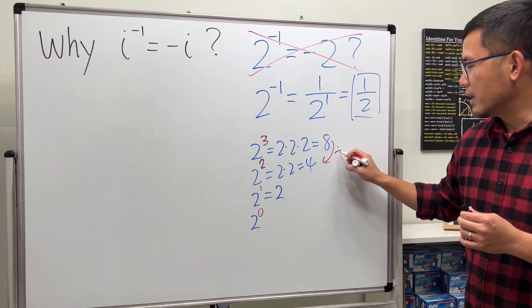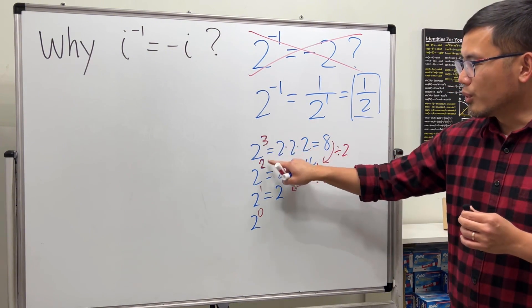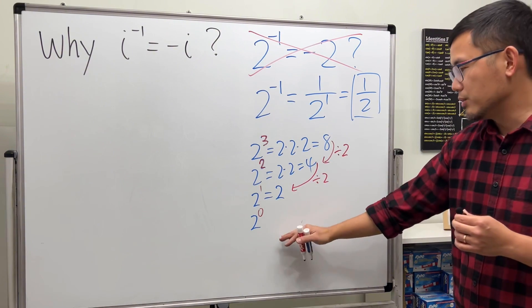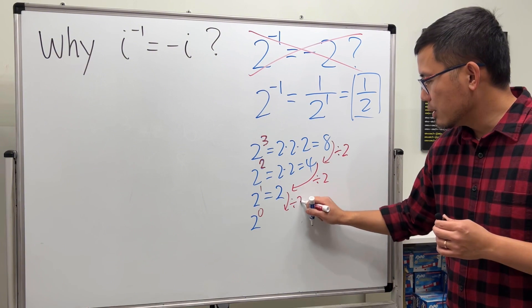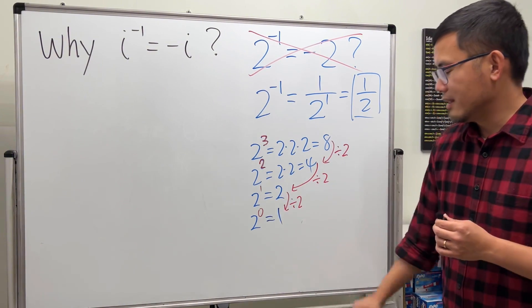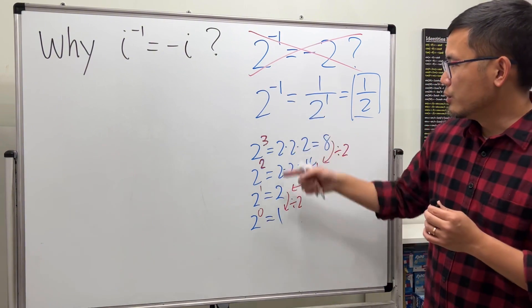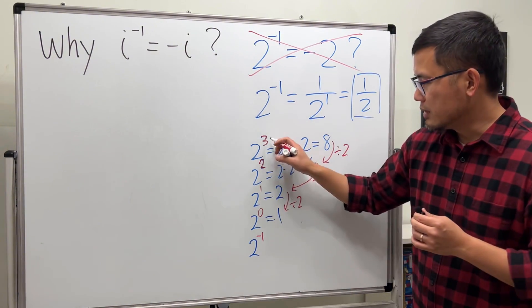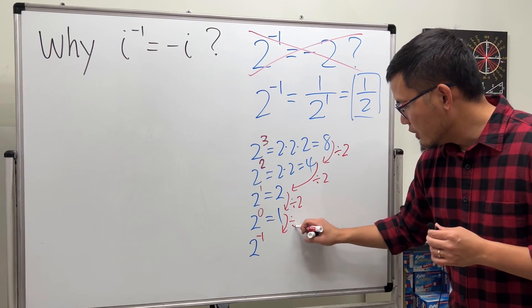You go down by dividing by 2. When you go down by 1 for the power, the answer divides by 2. 2 divided by 2, you keep the same pattern. 2 divided by 2, we get 1, so 2 to the 0 equals 1. To get to the negative first power, 2 to the negative 1, the powers are going down, so again you divide by 2. 1 divided by 2 is 1 half.